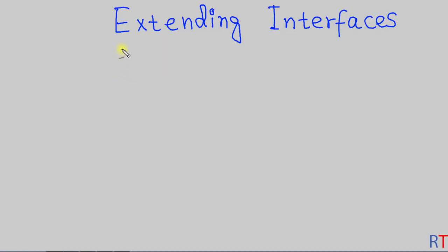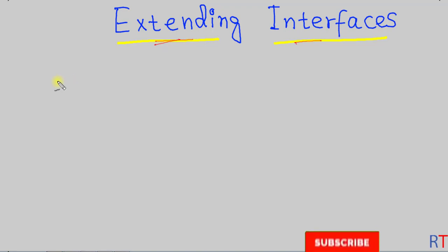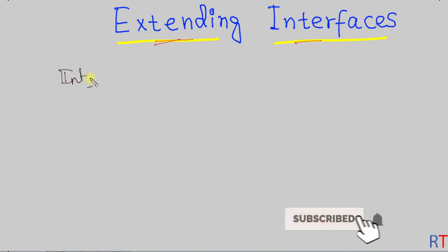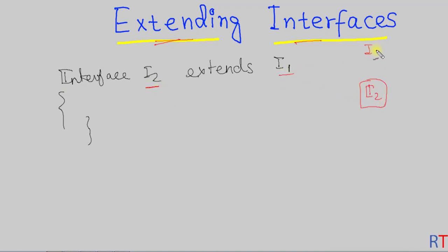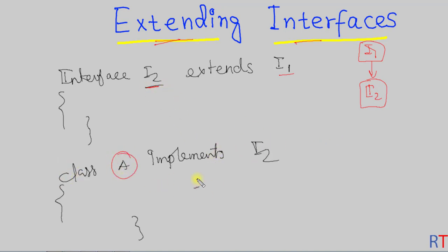In this video we are going to talk about extending interfaces in Java. One interface can derive the property of another interface by using the extends keyword. For example, if we have one interface i2 which is extending the property of another interface i1, then whenever one class implements the interface i2, the class has to define all the abstract methods in both interfaces i1 and i2.